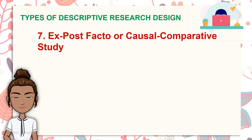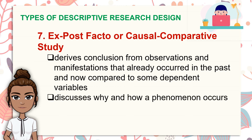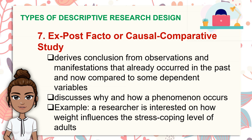The seventh type is the ex post facto or causal comparative study. It derives conclusions from observations and manifestations that already occurred in the past and compares them to some dependent variables. It discusses why and how a phenomenon occurs. For example, a researcher interested in how weight influences the stress coping level of adults would separate subjects into groups — underweight, normal, and overweight — and measure their stress coping levels. This is an ex post facto design because a pre-existing characteristic, which is weight, was used to form the groups.